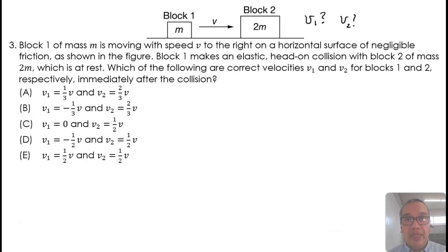On the one hand, because linear momentum is conserved, we have mv is equal to mv1 plus 2mv2. This simplifies to v is equal to v1 plus 2v2.